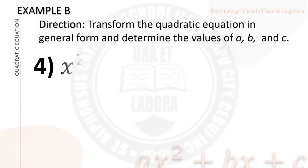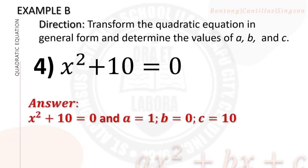Number 4: x squared plus 10 equals 0. The general form is x squared plus 10 equals 0 — it is already in general form with no linear term, so the value of b is 0. The values are a equals 1, b equals 0, c equals 10. Number 4 is also considered an incomplete quadratic equation, wherein there are only 2 out of 3 coefficients present.